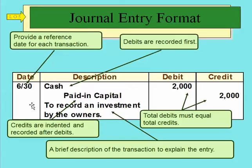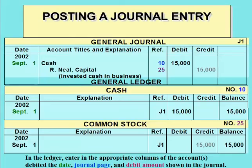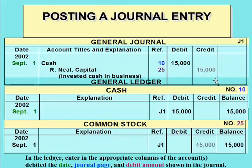Once we do all these journal entries, we take that information and post it into a ledger, where we keep all of our different accounts. For example, if cash was debited for $15,000, we would have a ledger account just for cash, and all the entries that impacted cash would be posted there. You'll see the $15,000 debit and then a running balance. There's also a reference column that refers to the page number from the general journal, and a reference to the account number so we know the entry was posted to cash and common stock.